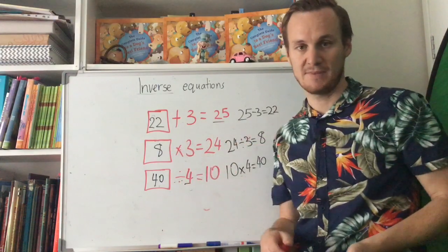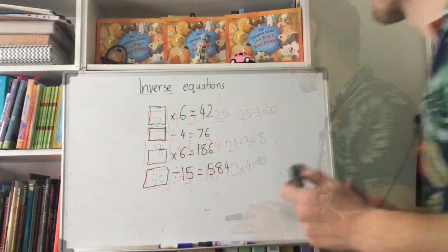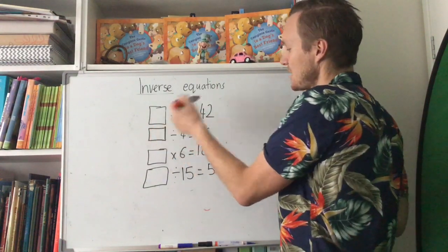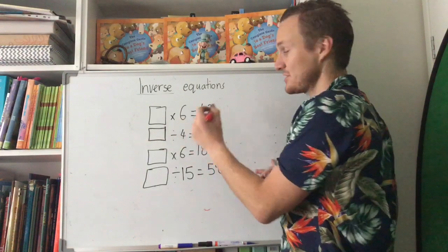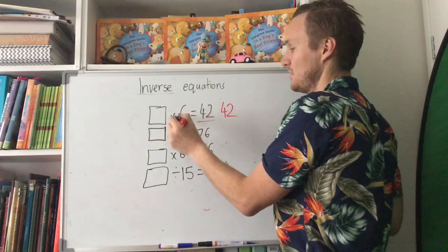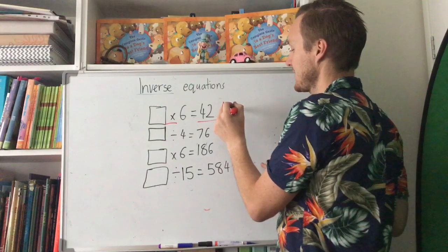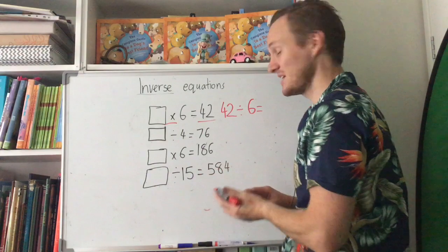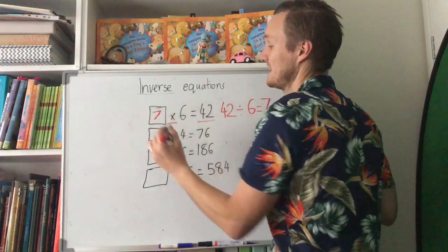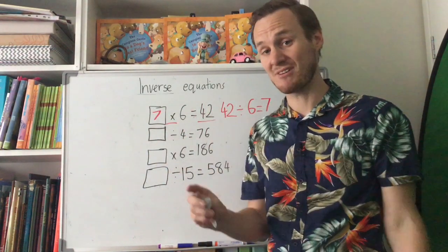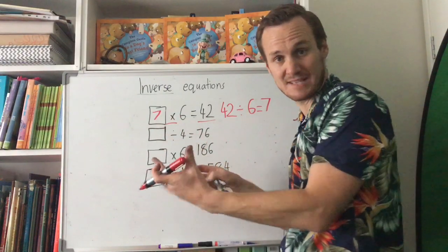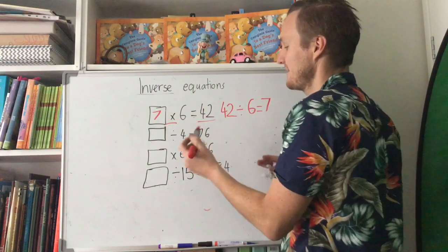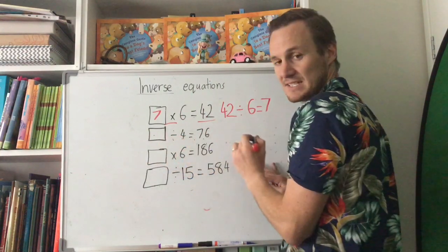Let's go a little bit harder. First one: something times 6 equals 42. We put it in reverse — start with the answer, change multiplication to division: 42 divided by 6. I know my 6 times table, so 42 divided by 6 equals 7. Now it's really important to check your answer: 7 times 6 is 42. Correct!